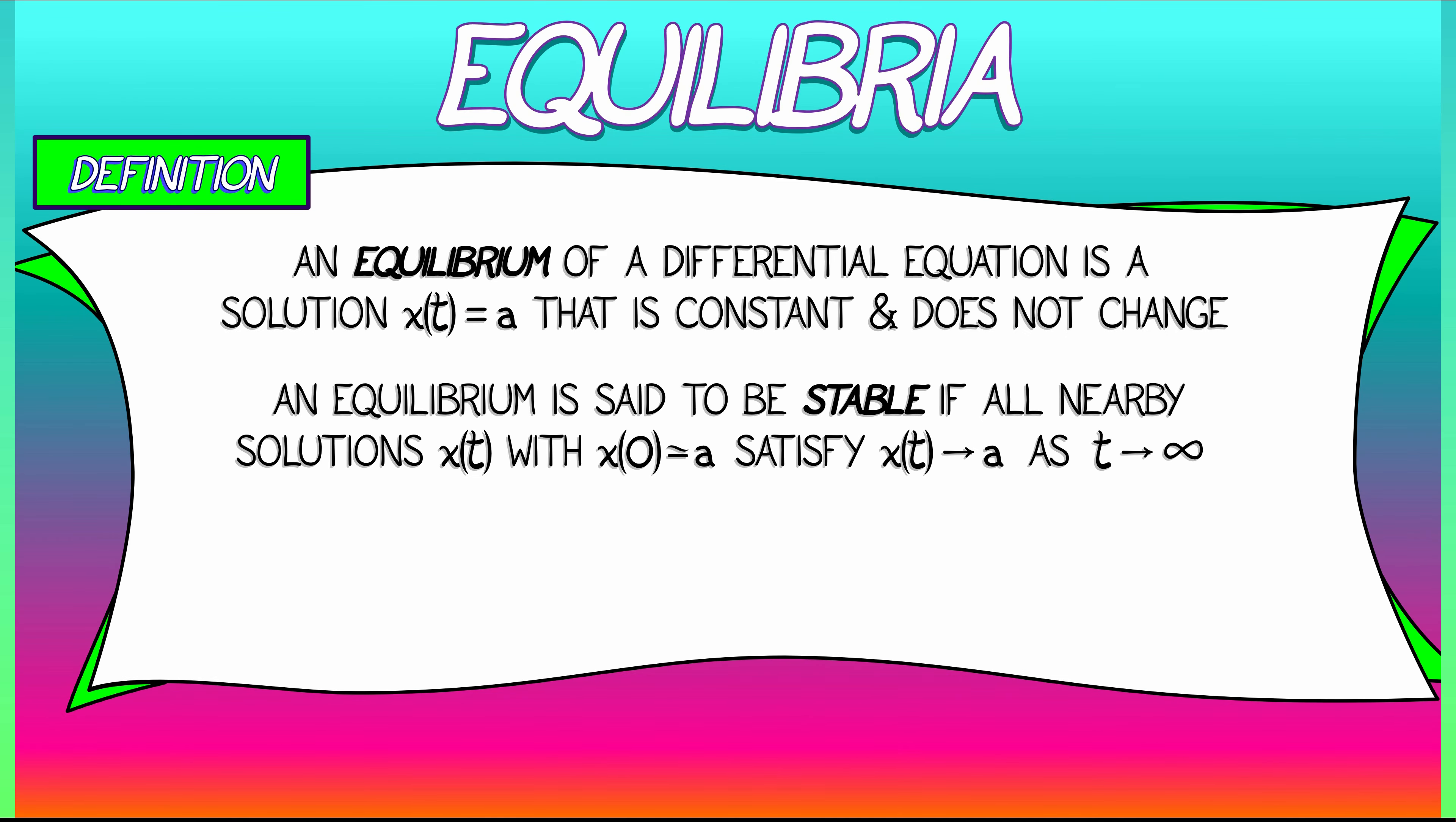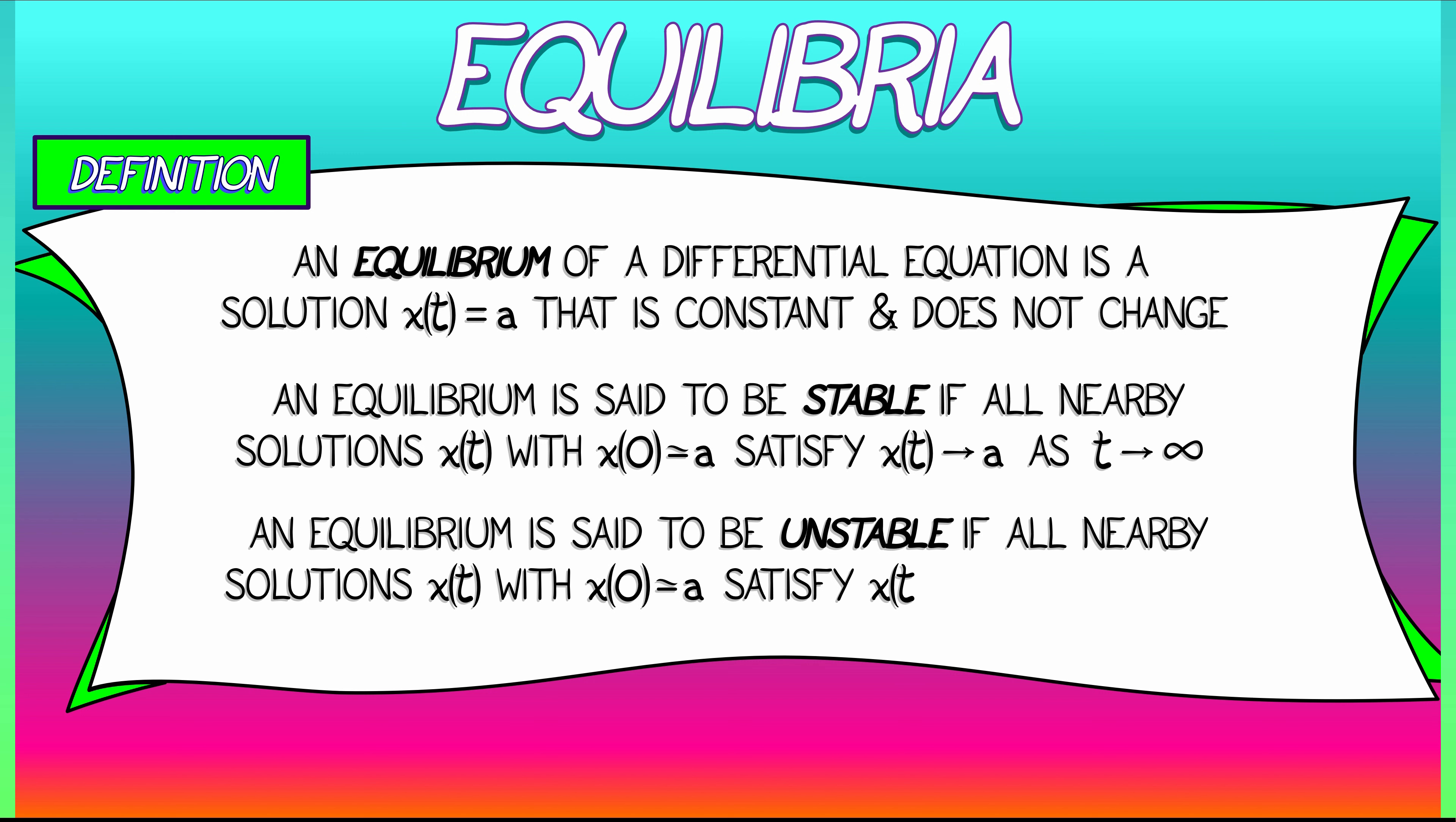unstable? Let's try to repeat the definition. We're going to say that an equilibrium is unstable if all the nearby solutions x(t) whose initial conditions are close to a... what do they satisfy? We can't say that the limit as t→∞ of x(t) is infinity or negative infinity, because that's not necessarily the case. And what happens if you pick the initial condition that's exactly a?